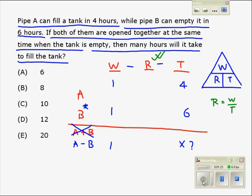We also know that this rate plus this rate equals this rate. In this situation, it is not plus but minus, because the second pipe is emptying the tank.